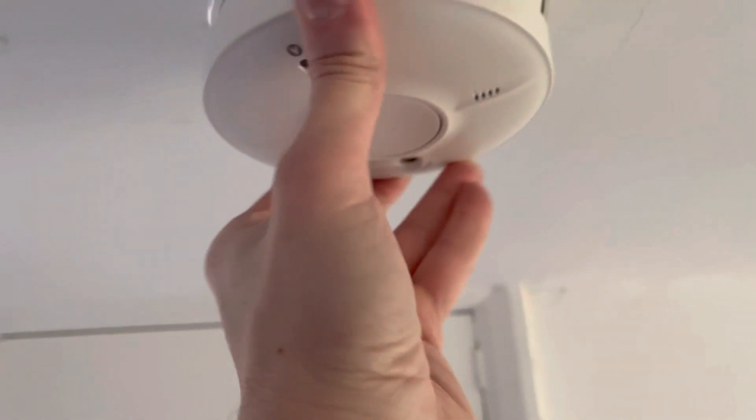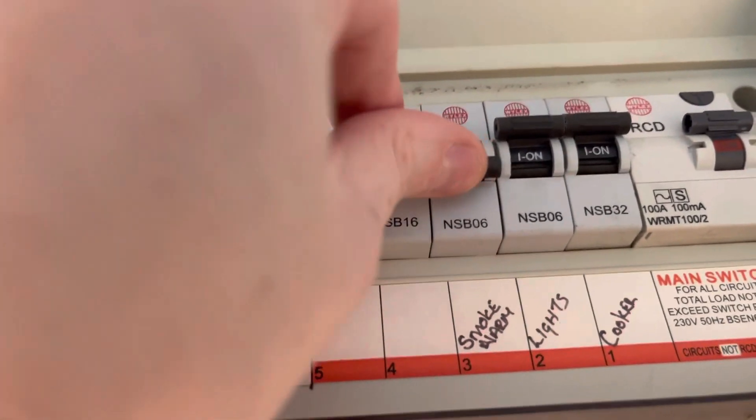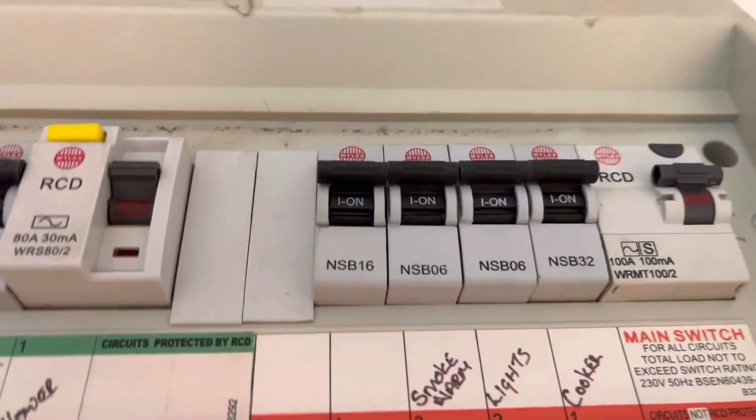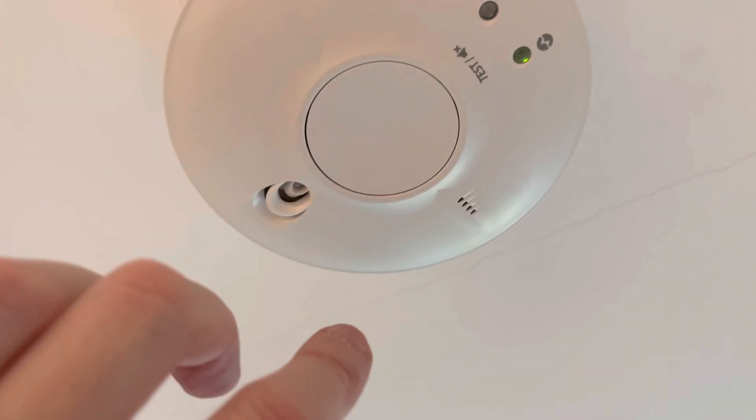It should only go in one way around because of the little noggin through the hole. Clip that on, screw it back in, switch the breaker back on, and then we'll give it a test. We should hear an alarm in the other room first.